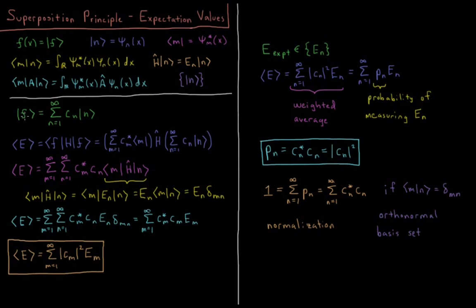We can represent any possible wave function as a linear combination of our eigenfunctions. So we have a sum from n equals 1 to infinity of some coefficient — some scalar value, which could be a complex number in general but usually we use real numbers — times that eigenfunction psi_n, summed over all eigenfunctions.